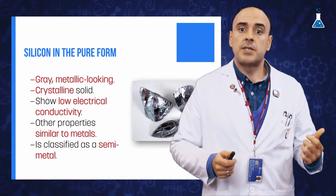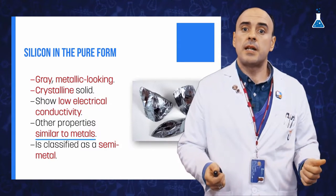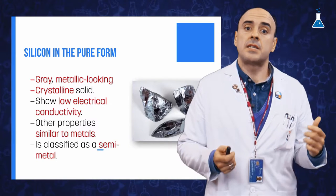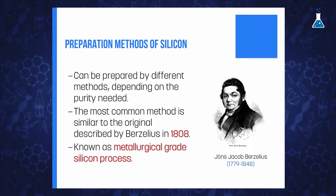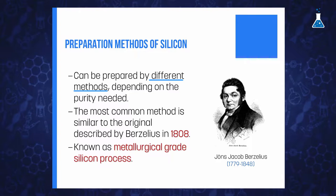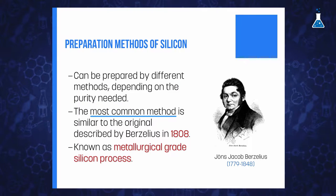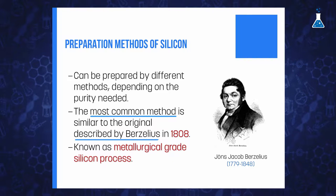Due to the fact that it possesses some other properties similar to metals, sometimes this element is preferred to be considered as a semi-metal. The element can be prepared by different methods depending on the purity needed for further application. Currently, the most common method of producing silicon is similar to the original method described by Berzelius in 1808.